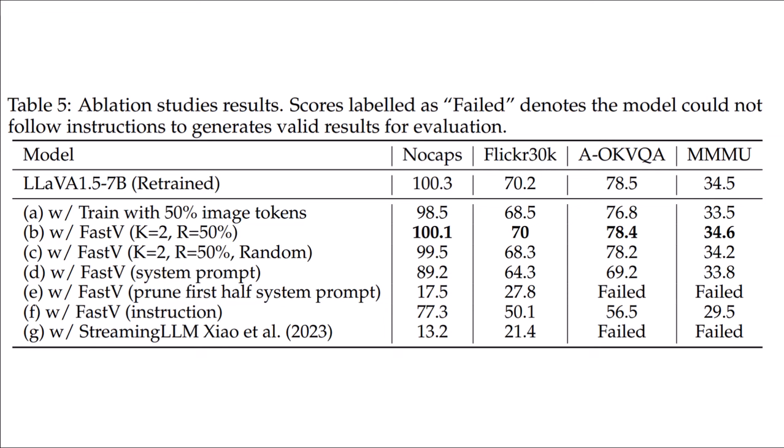An ablation study examines what happens at training time: randomly dropping 50% during training always decreases the score compared to the original model using 100% of image tokens. But applying FastV at inference time with layer 2 and 50% drop gives better results. So doing it at training time saves training compute, but adding it only at inference time yields better performance. They also tried random dropping at layer 2 without attention ranking — results are decent but not as good as the ranked approach.